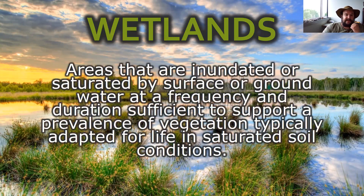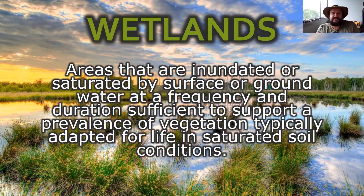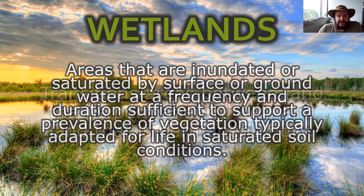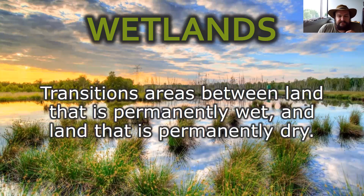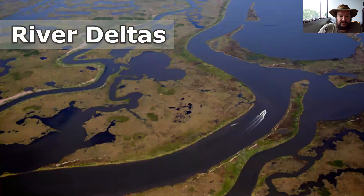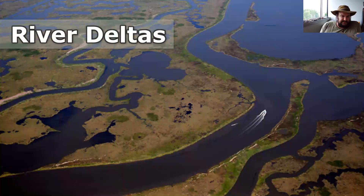So what is a wetland? Wetlands are areas that are inundated or saturated by surface or groundwater at a frequency and duration sufficient to support a prevalence of vegetation that is typically adapted for life in saturated soil conditions. Another way to think about it is these are transition areas between land that is permanently wet and land that is permanently dry.